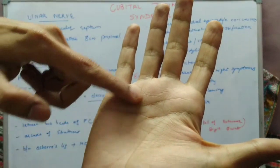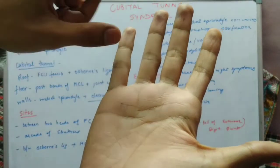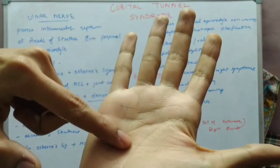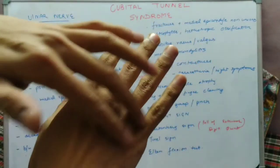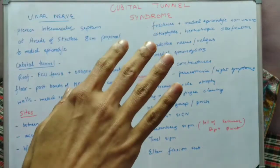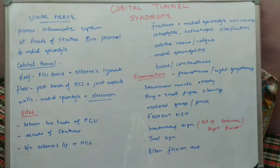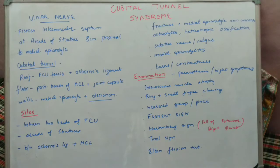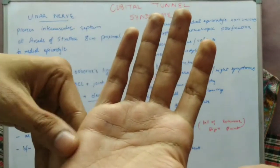Coming to examination findings: the patient will complain of paresthesia in the ulnar nerve distribution area, which is the little finger and the ulnar half of the ring finger on both the palmar and dorsal aspects. Mostly the patient will complain of night symptoms because patients tend to sleep with the arm in flexion — symptoms are more likely to occur in elbow flexion.